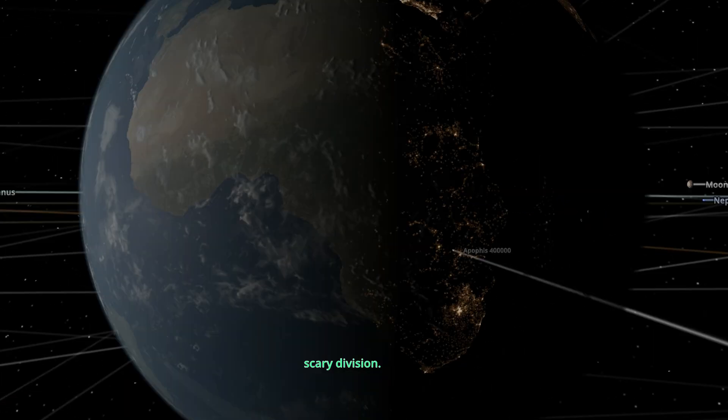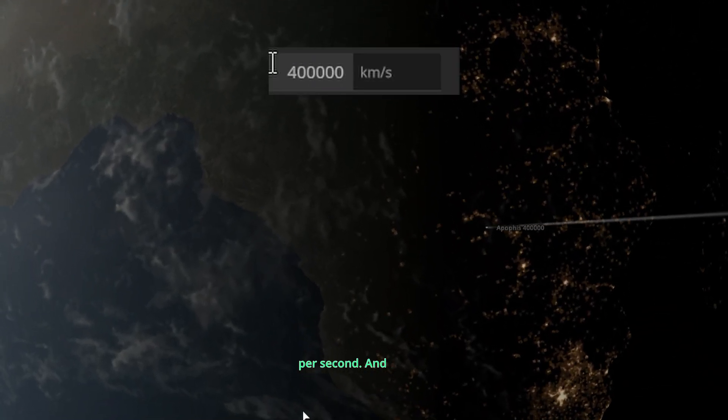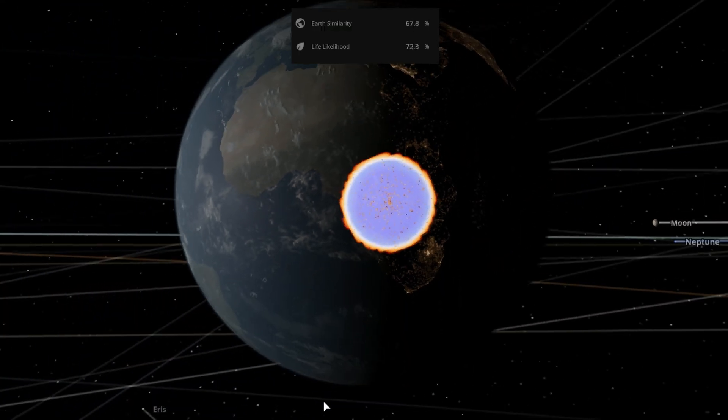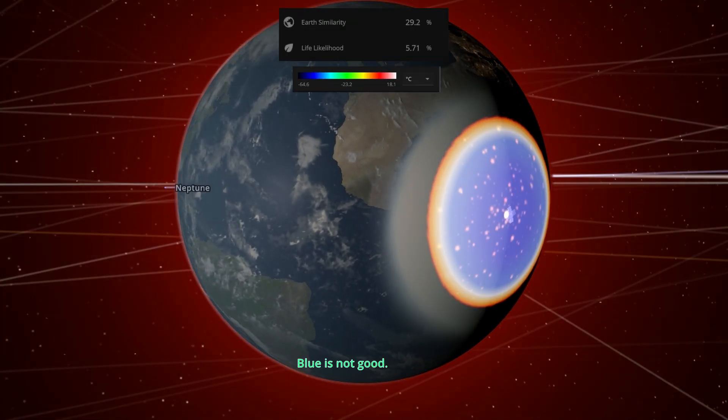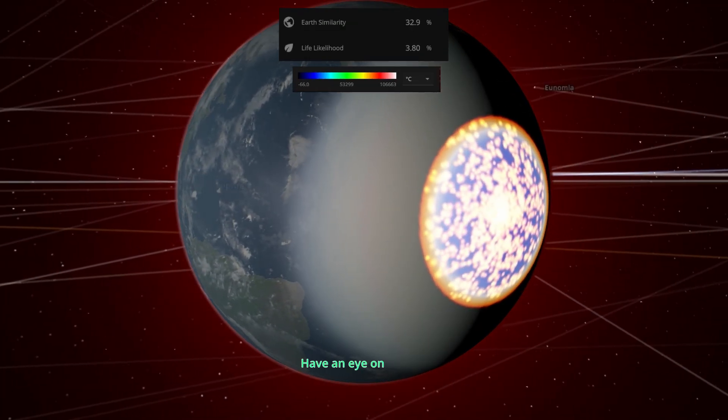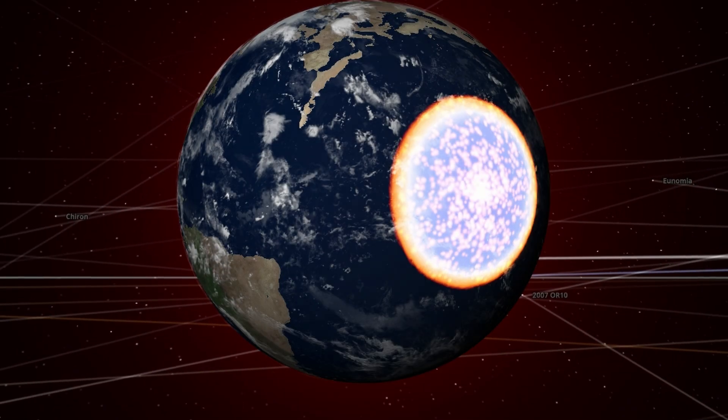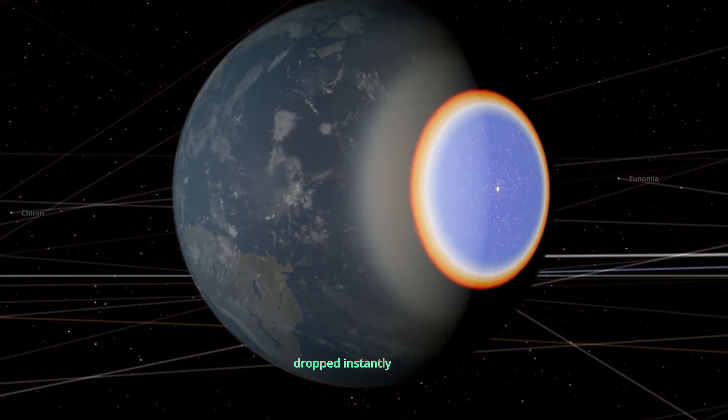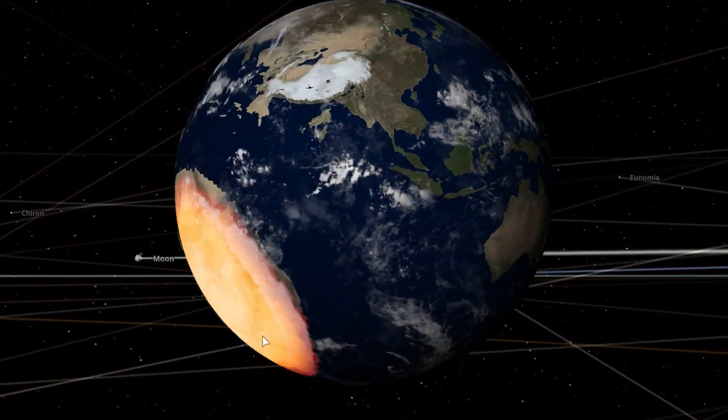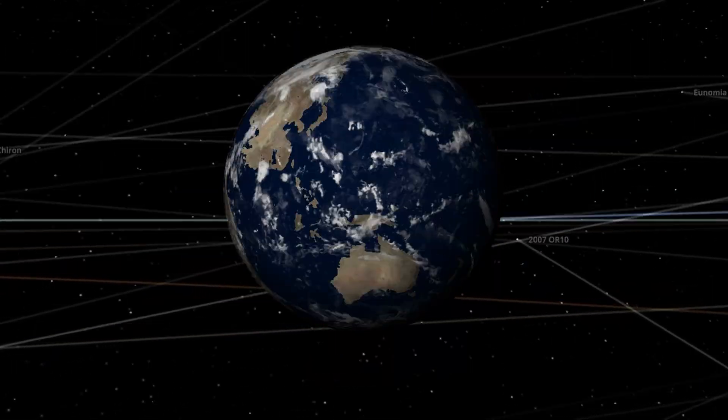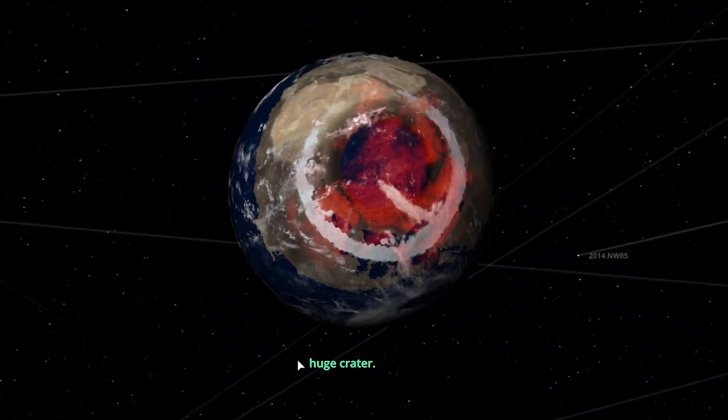Now it's time for the scary division. 400,000 kilometers per second. And there it goes. Whoa, whoa, whoa. Blue is not good. Have an eye on the atmosphere. Life likelihood dropped instantly very low. That is a huge crater.